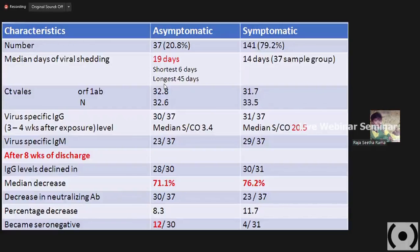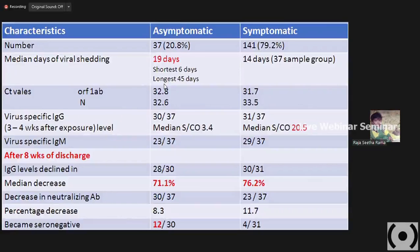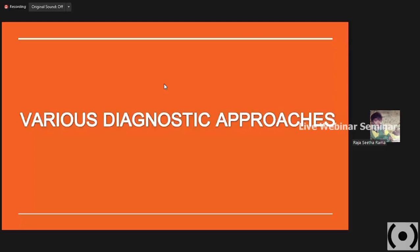If you see the viral-specific immunoglobulins present three to four weeks after exposure, it is 30 out of 37 patients in asymptomatic and 31 out of 37 in symptomatic conditions. Viral-specific IgM shows 23 out of 37 and 28 out of 37 in symptomatic cases. The relevance of the prevalence of viral-specific immunoglobulins could increase the confidence level of selecting serological assays. These are some basic characteristics. Coming to our main topic — the various diagnostic approaches — you have to first decide on the sample type: respiratory samples or blood samples. Digital imaging can also be done to detect.